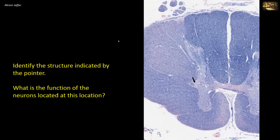Identify the structure indicated by the pointer. What is the function of neurons located at this location? This is the intermediolateral cell column, or the lateral horn of the spinal cord. It is a nucleus confined to the thoracic and upper lumbar regions of the cord. The same sections also contain the nucleus dorsalis of Clark, which can be seen at the base of the dorsal horn.